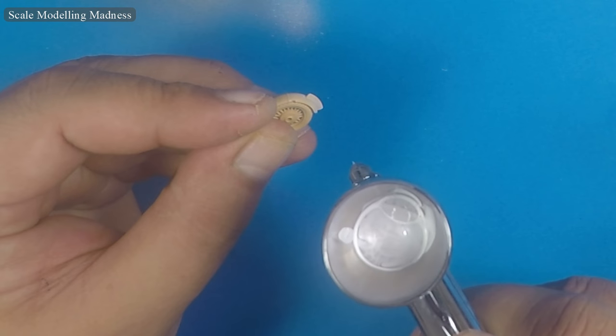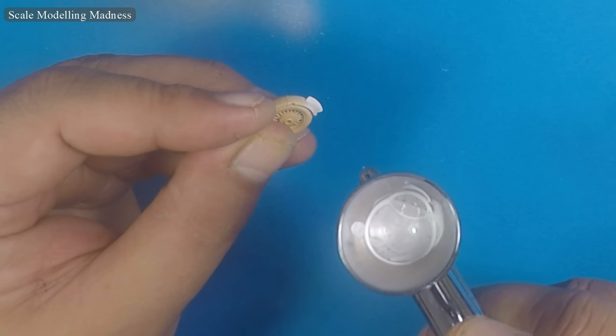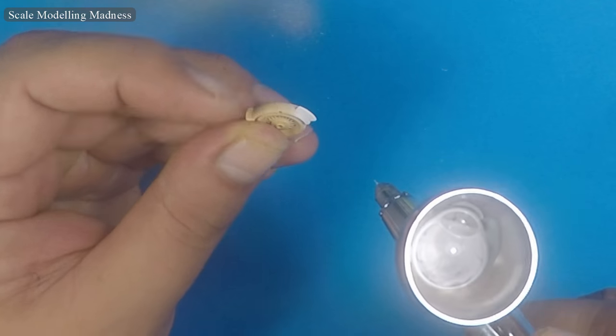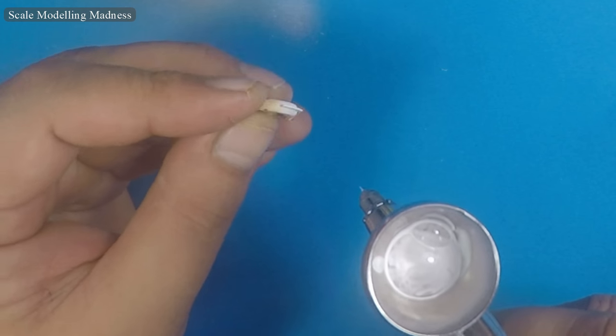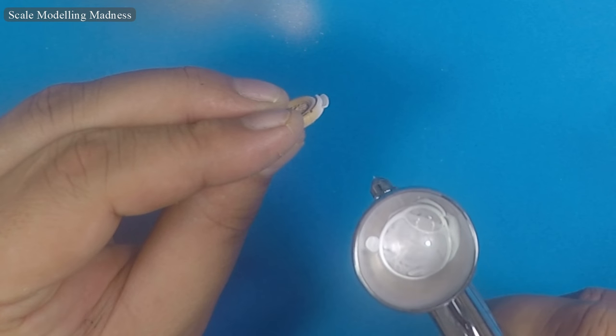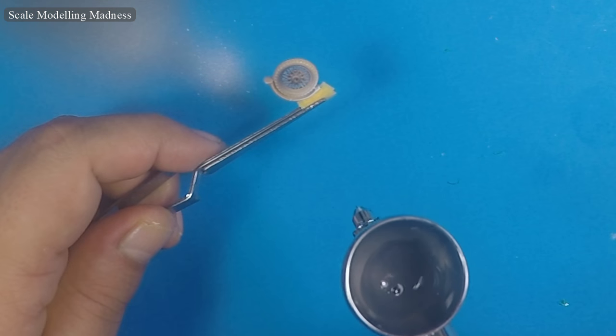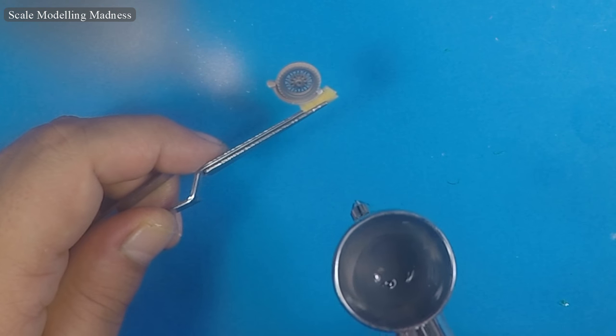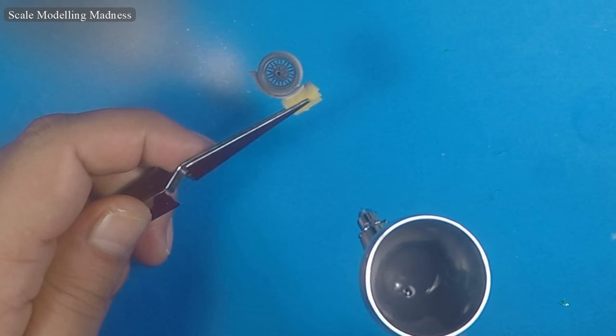The front wheel assembly starts by painting the front number plate with white and then masking it. The part is painted with German grey as are all the other parts of the front wheel and handlebar.